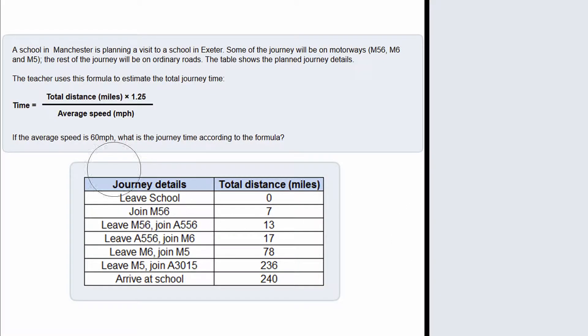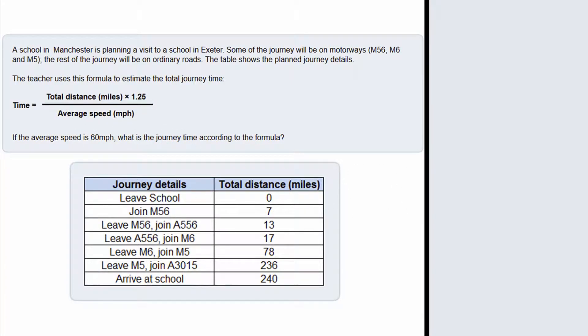So what we need for the formula is the total distance in miles and the average speed. We are given the average speed — that is 60 — so we need to find the total distance in miles. Now we have to be quite careful here.